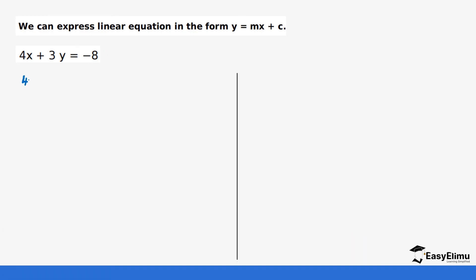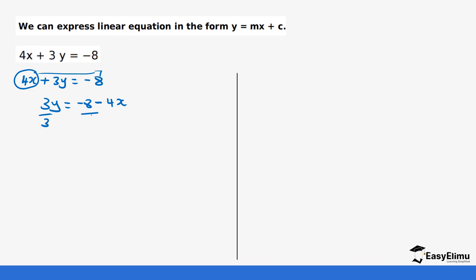Let's go step by step. We start with the equation as it is. The first thing we want to do is move the x values to the other side. This becomes 3y equals minus 8 minus 4x. Be careful with the minuses — since 4x was positive on this side, when it moves to the other side it changes to a negative value. Our equation is not complete because we have a value next to the y, so we need to get rid of that by dividing everywhere by 3. If you do so, you get y equals negative 8 over 3 minus 4 over 3 x.